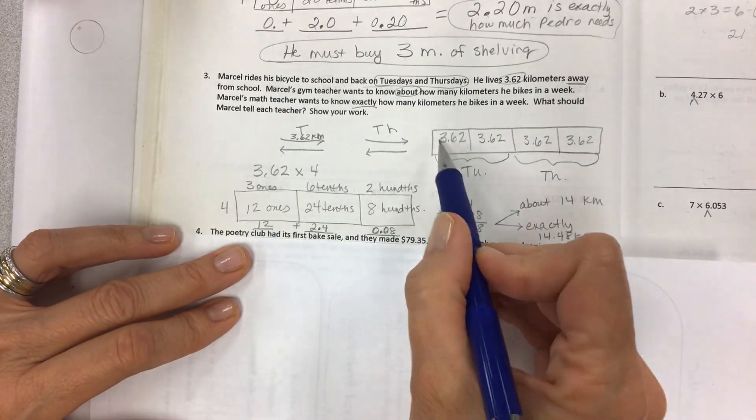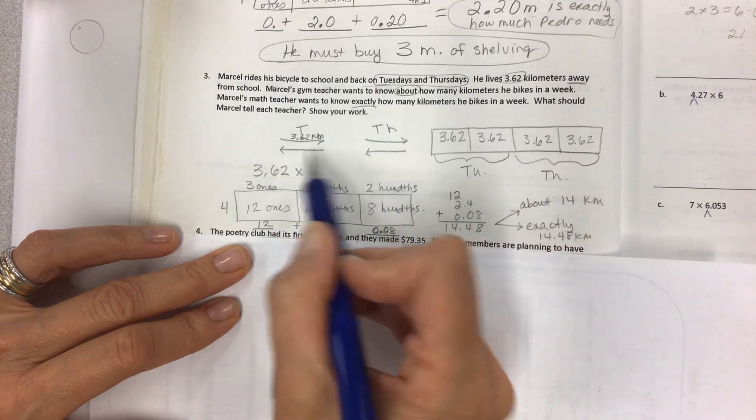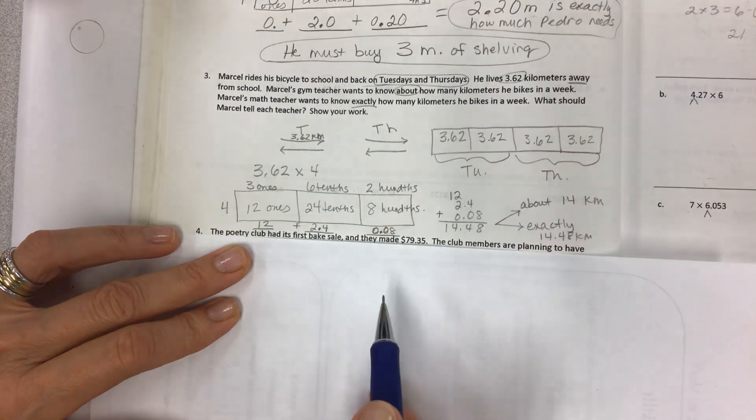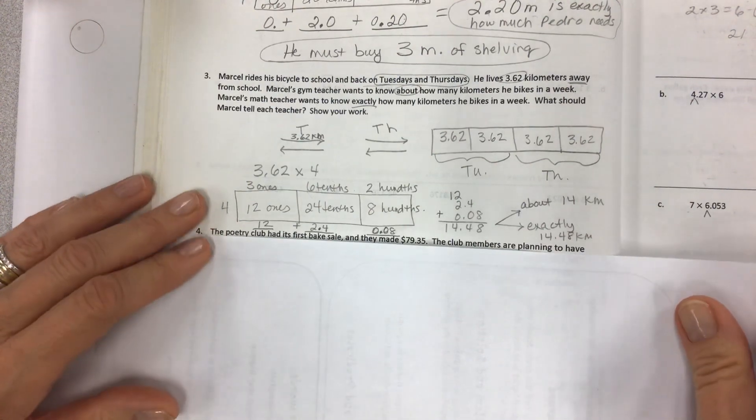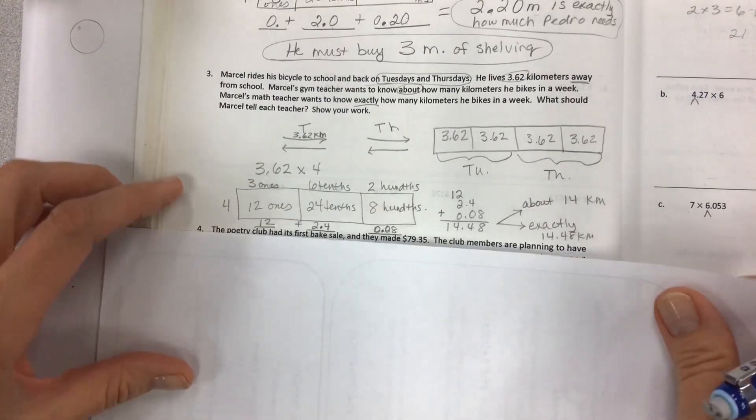Take your time, set them up, make your models, draw everything you can. Do repeated addition, prove your work. Just make sure you understand what's happening and label everything.